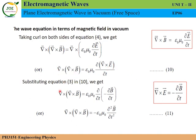So del cross del cross B equals epsilon-zero mu-zero dou by dou t of minus dou B by dou t, giving del cross del cross B equals minus epsilon-zero mu-zero dou-squared B by dou t-squared. This is equation number 11.